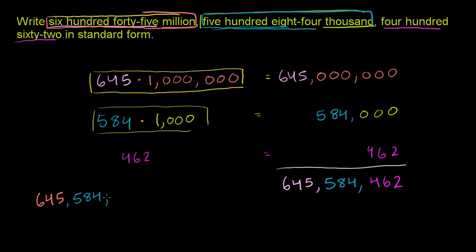584,000, keeping in mind that you're going to need three digits to the right of that. And so if they didn't tell us 462, we would just put three zeros here, and that would also fulfill the six zeros we need behind 645 million. But then they tell us 462, so we just write that right here. 462.